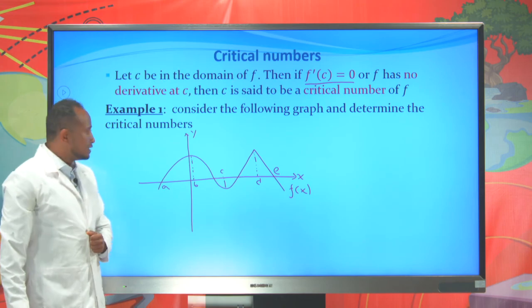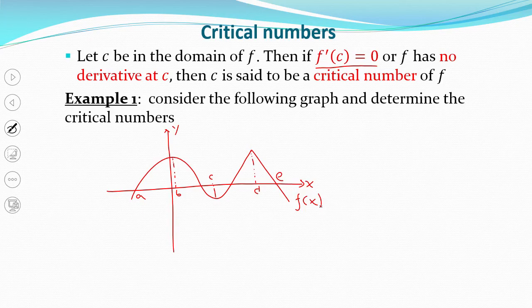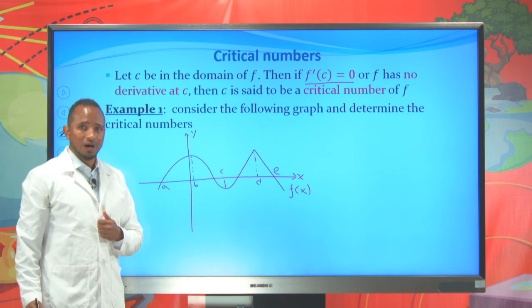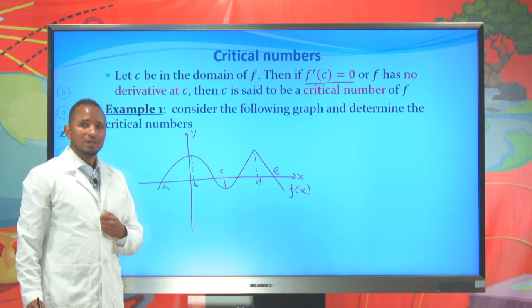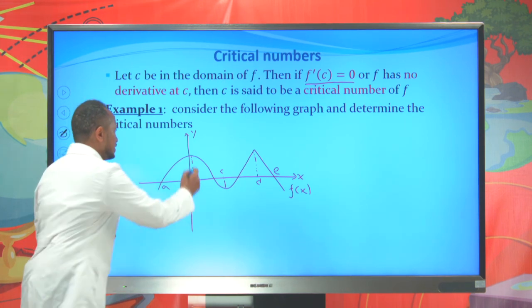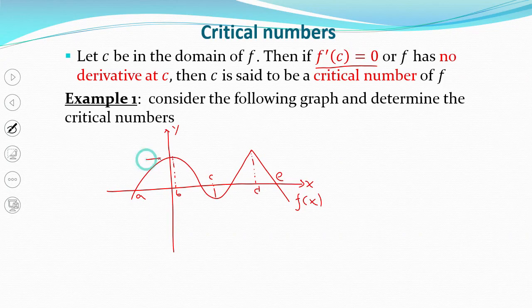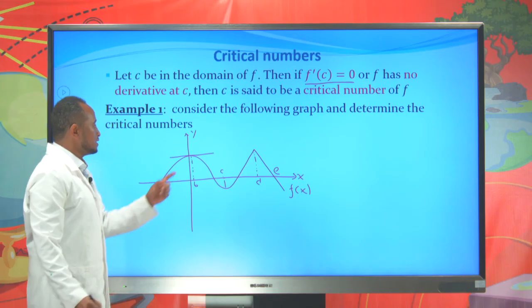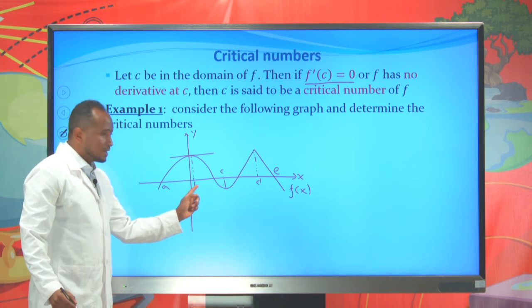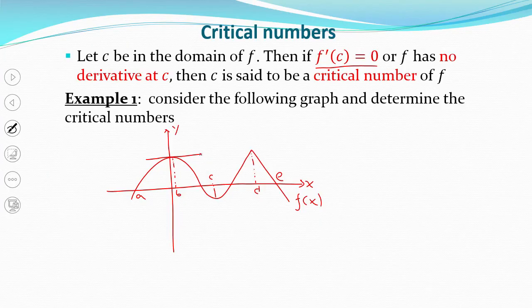To find the critical number, we need to find the point where the derivative of this function is 0. The derivative means it is the slope of the tangent line, so we need to find the point where the slope of the tangent line for this graph is 0. If we take the tangent line at point B, it is a horizontal line. So the derivative at this point is 0, meaning B is a critical number — F'(B) = 0 since the tangent line is horizontal.